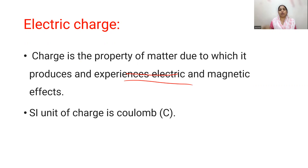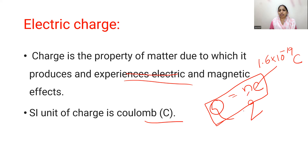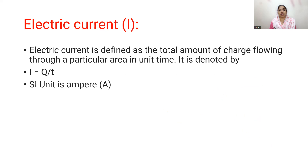Electric and magnetic effects are a material property that we call electric charge. Electric current is the rate of flow of charge through a given area. The formula is I equal to Q by T. The SI unit is Ampere.